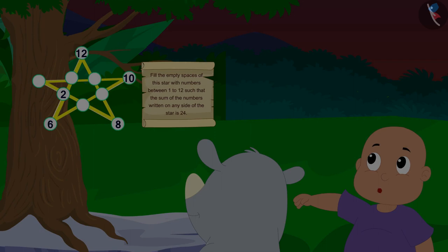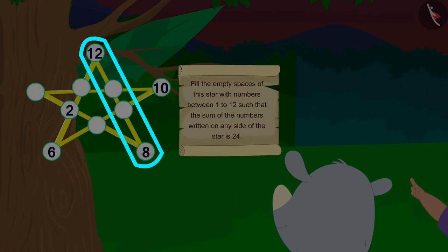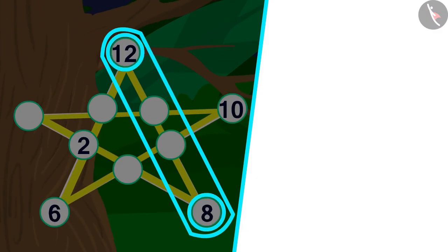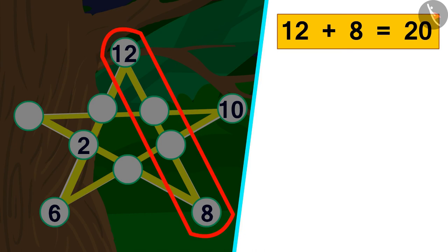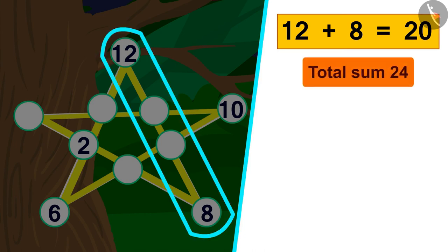Look uncle. On this edge, there are two numbers. 12 and 8 are already written. If we add these two numbers, the answer will be 20. Now, the total addition of this edge should be 24.